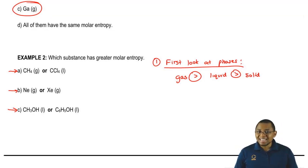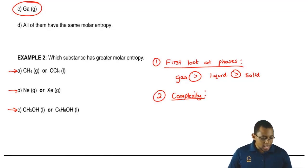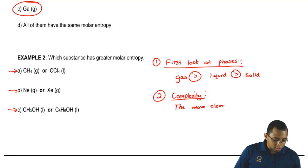Now, if they're tied in the same phase, then we move on to complexity. What the heck do I mean by complexity? All I'm saying is the more elements that make up the compound, the more entropy. The more elements that make up the compound, then the more entropy.